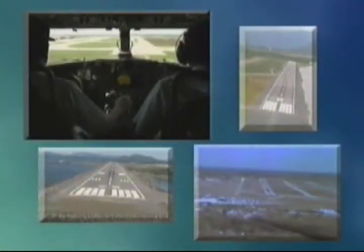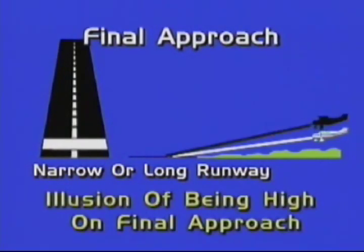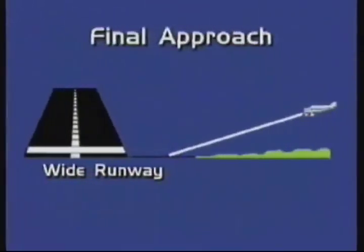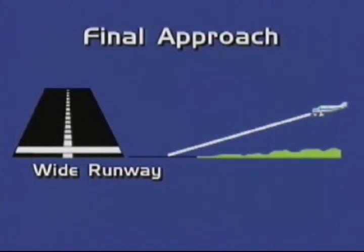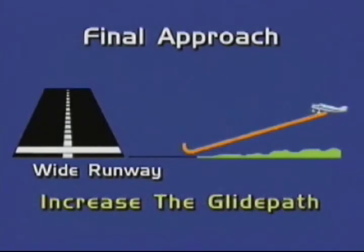Runways with varying widths and lengths are another source of illusions that may affect your perceived glide path. An approach to an unusually narrow or long runway may produce the visual illusion of being high on final approach. If believed, you may respond by pitching the aircraft nose down to decrease your glide path, which, if performed too close to the ground, may result in an accident. An approach to an unusually wide runway may produce the opposite illusion of being low on final approach. If believed, you may respond by pitching the aircraft nose up to increase glide path, which may result in a low-altitude stall or a missed approach.